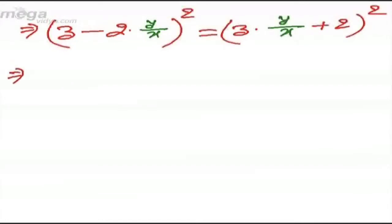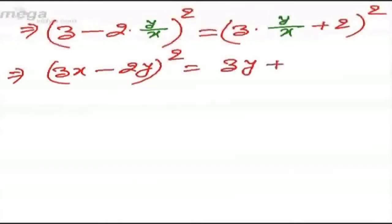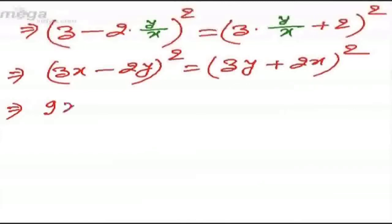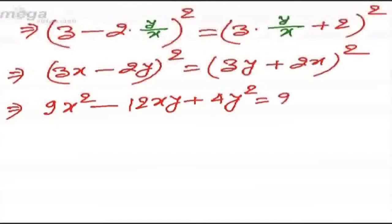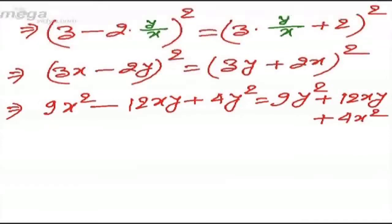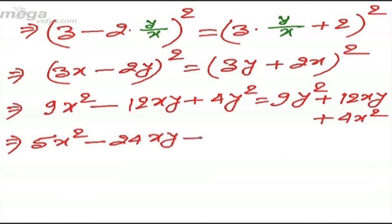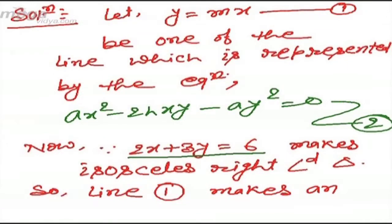Expanding both sides: 9x² - 12xy + 4y² = 9y² + 12xy + 4x². Transferring everything to the left side gives 5x² - 24xy - 5y² = 0.